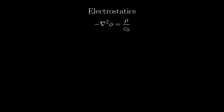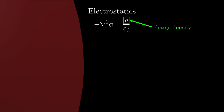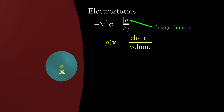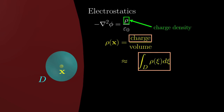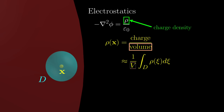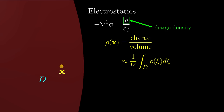Let's return to the electrostatics example and look at the charge density distribution. From a practical point of view, how do we determine the charge density at position x? The charge density is charge over volume in an infinitesimal region. Let's consider a relatively small region, which we call D. For the numerator, the charge within region D can be found by integrating the charge density over the entire region, where V denotes the volume of region D. However, integrating over D is not ideal, because the region is going to change in the limiting process.